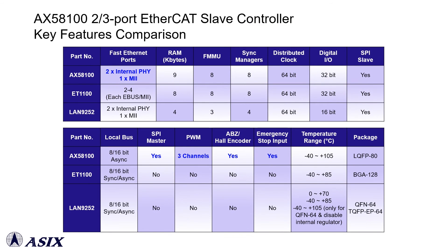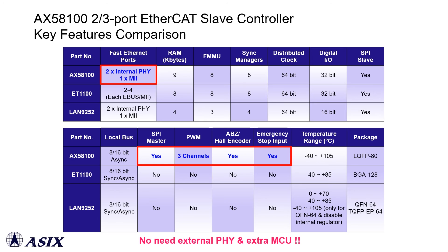Compared with other EtherCAT Slave controller solutions, the AX58100 already integrates two embedded fast Ethernet PHYs, and supports additional interfaces such as SPI Master, PWM, ABZ, and HAL encoder, for designers to easily implement AX58100 on different EtherCAT Slave applications without an extra microprocessor.